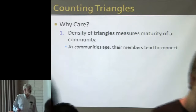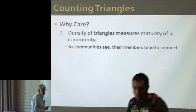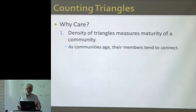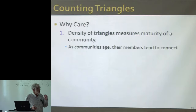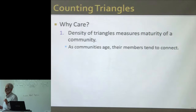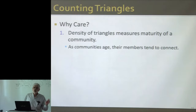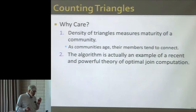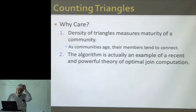Let me go through the second problem I wanted to talk about, which was how you count the number of triangles in a graph. The application I've mentioned before is up here: the density of triangles has been used to measure the age or maturity of communities, on the theory that as a community ages, more and more of its members tend to connect and therefore the density of triangles grows. But what I want to talk about actually turns out to be a special case of a very recent theory of how you do optimal joins of all types.